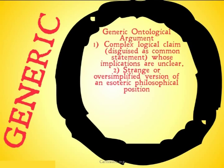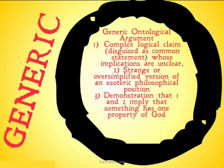We also often include a strange or oversimplified version of an esoteric philosophical position. These are clearly things like the Meinongian or the Mereological ontological argument, but also more common things like the use of S5 in the modal ontological argument. These are philosophical positions that we might not generally accept, but we don't know much about, so we might take them for granted. And finally, usually there's some demonstration that these premises imply that something has one or two properties of God, from which we conclude that therefore God exists.